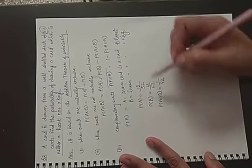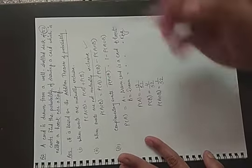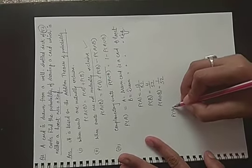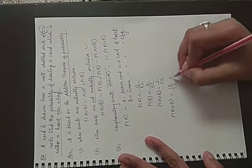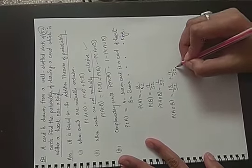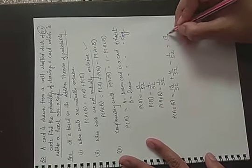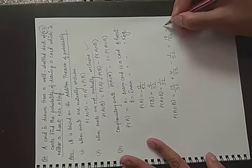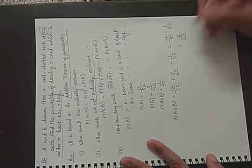So, if this is common event, this is case number 2, when events are not mutually exclusive. Then, P(A union B) is equal to P of A, 13 by 52, plus 4 upon 52, minus 1 upon 52, that is equal to 17 upon 52, minus 1 upon 52, equals 16 by 52.